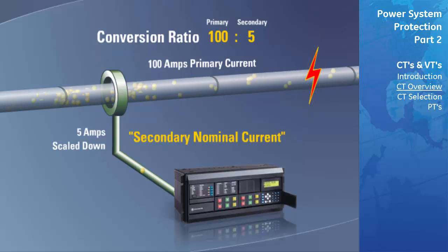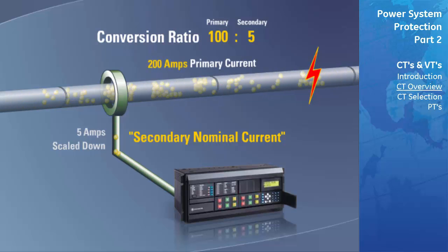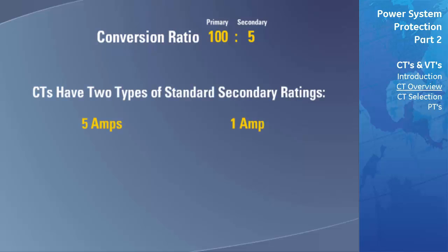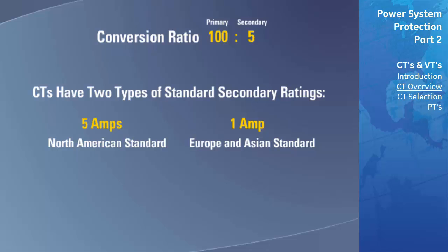If a fault were to occur on this phase that increases the primary current to 200 amps, then 10 amps would be passed to the relay through the secondary windings consistent with the ratio. CTs have two types of secondary ratings: 5 amps and 1 amp respectively. 5 amps is typically the North American standard, while 1 amp is used in Europe and Asia.